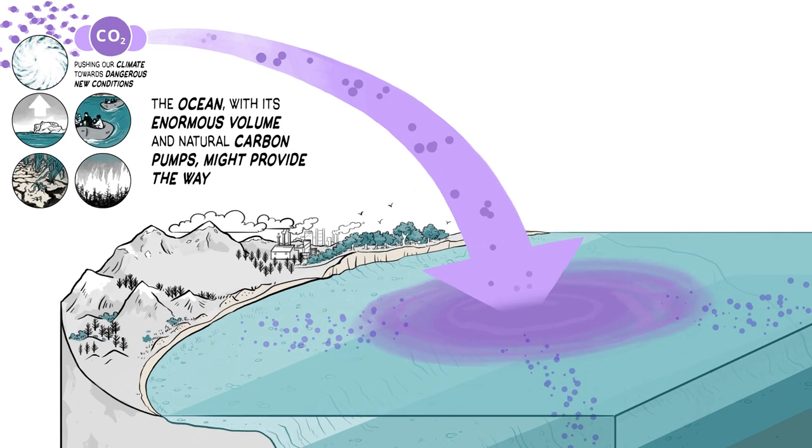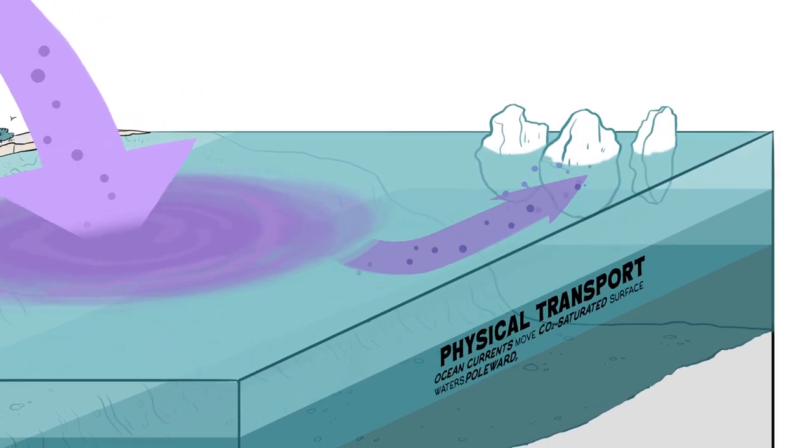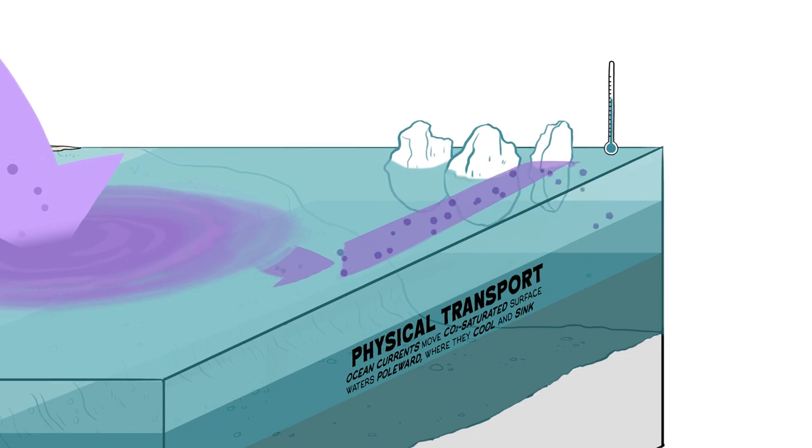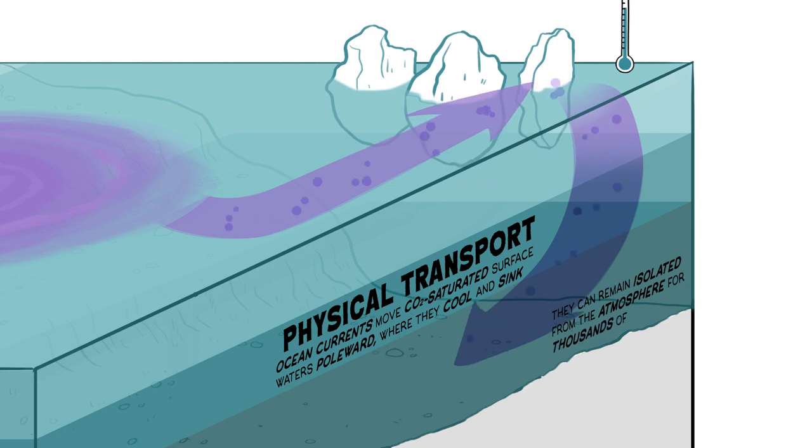Ocean currents move CO2-saturated surface waters poleward, where they cool and sink, pulling our emissions into the deep ocean, where they can remain isolated for thousands of years.